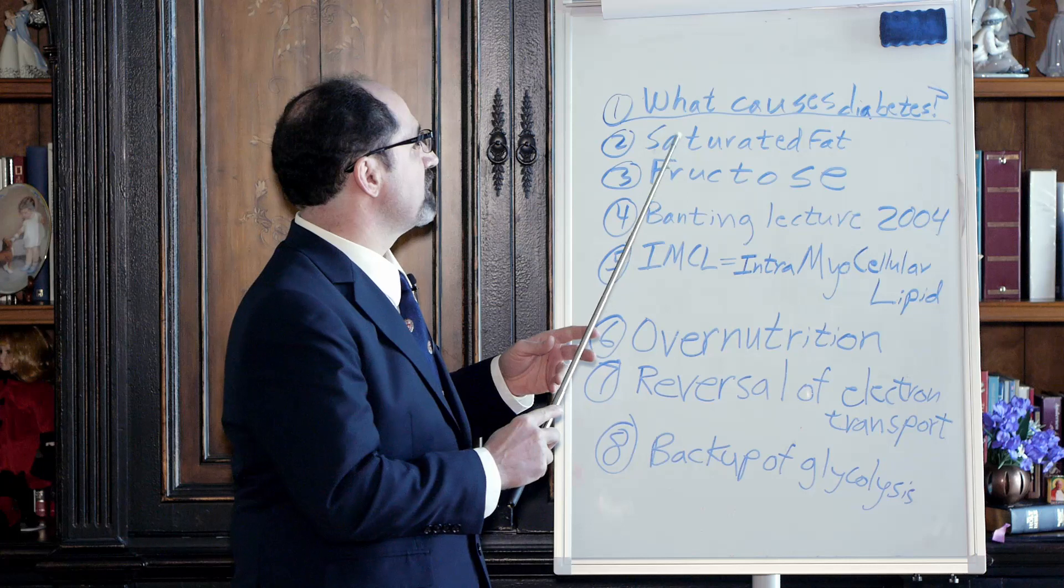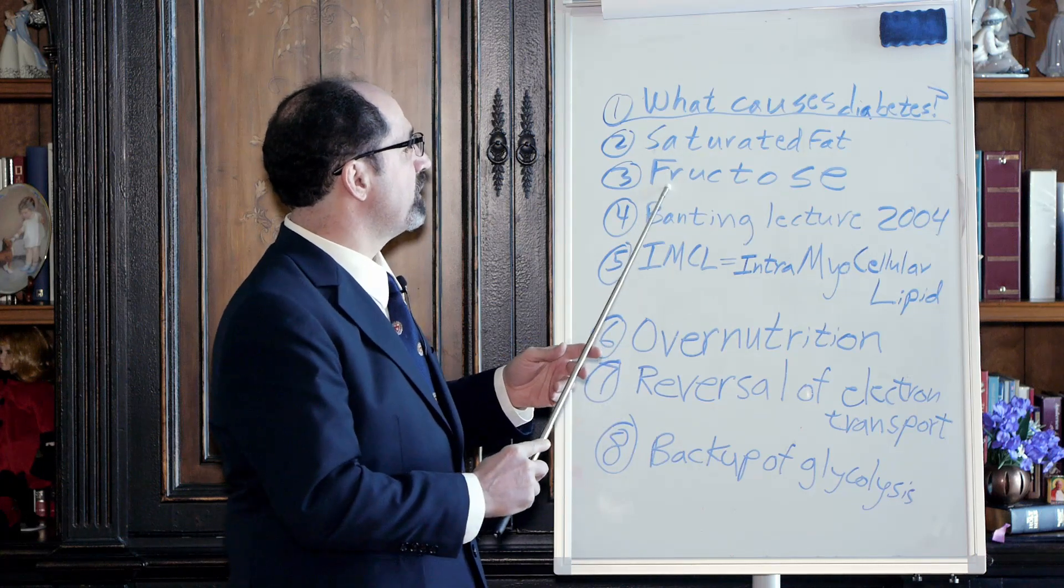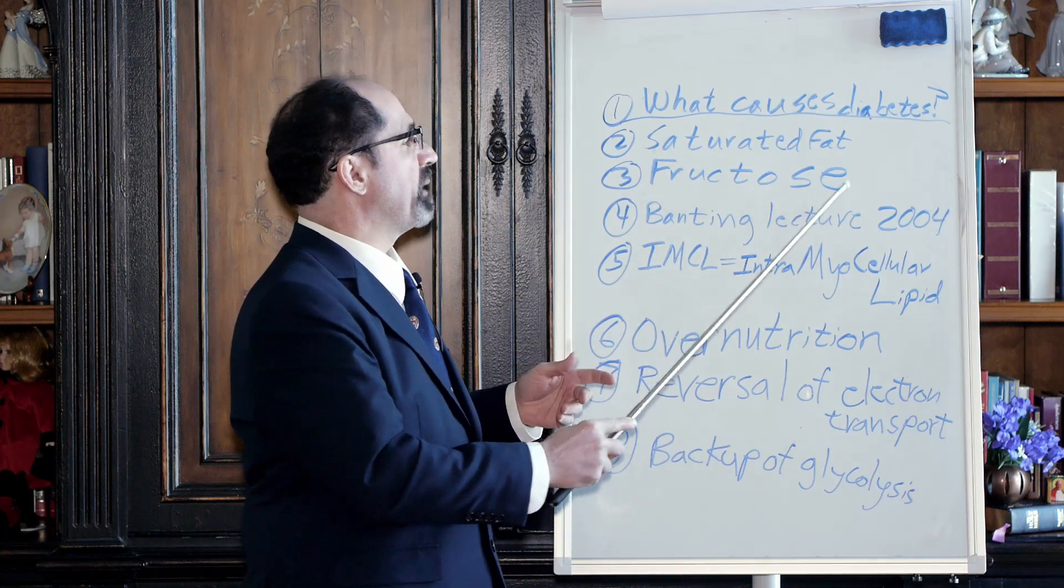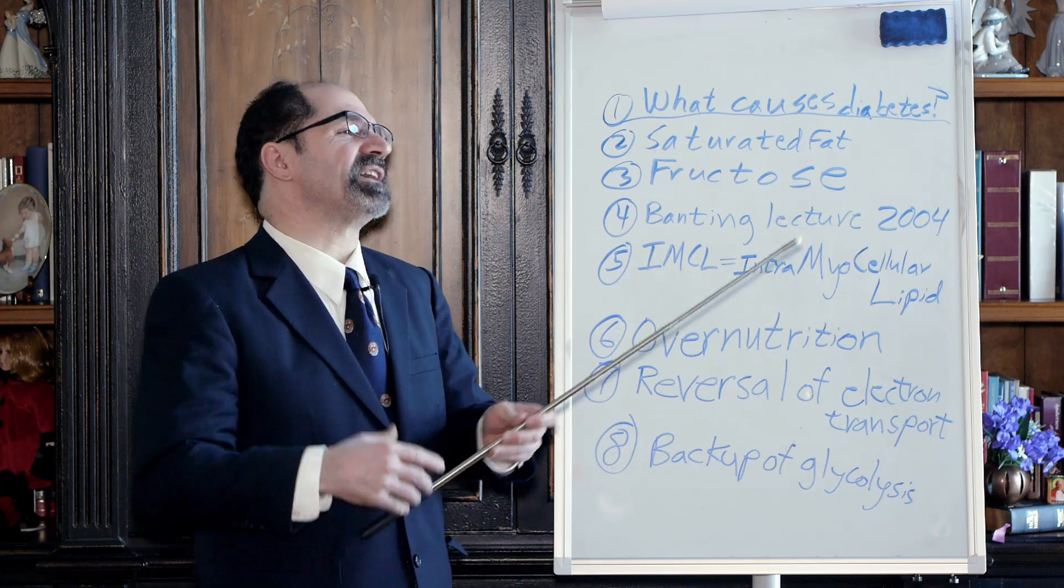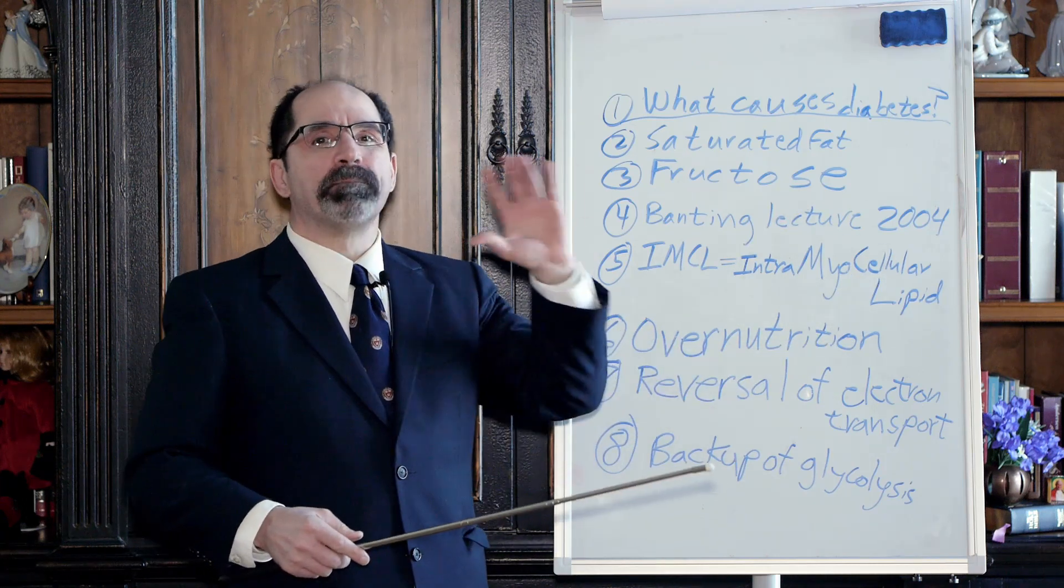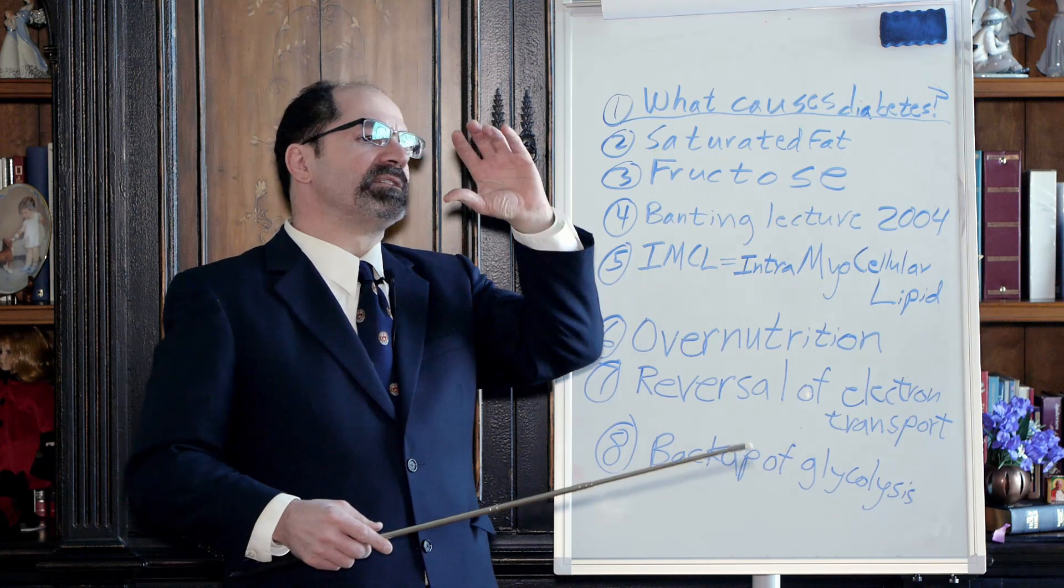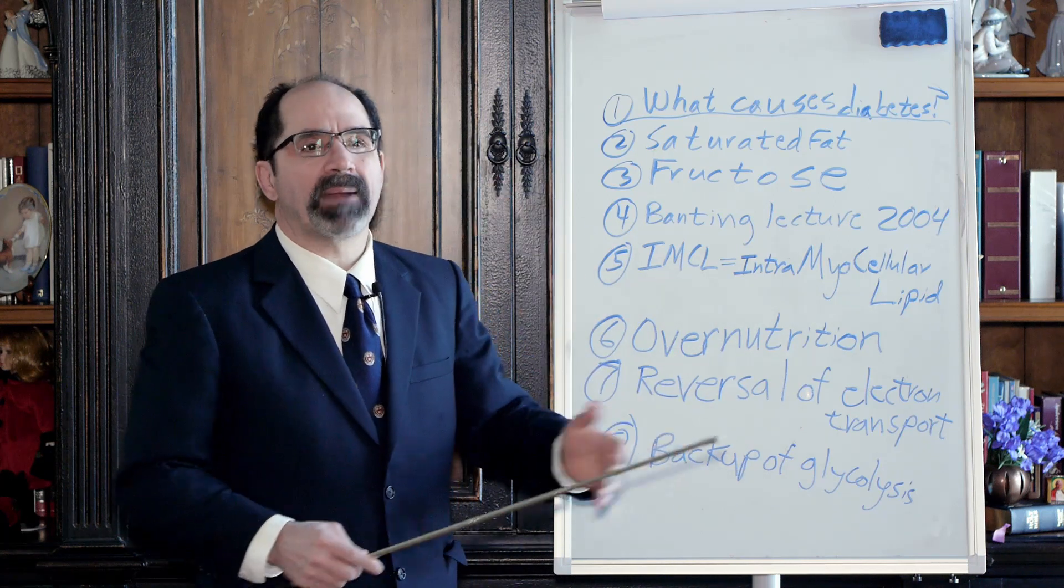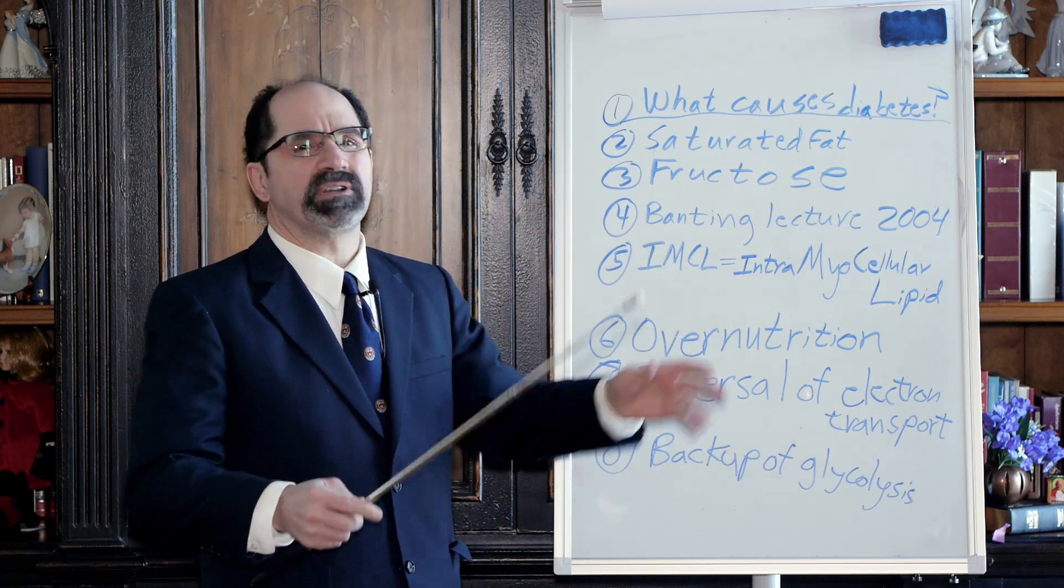So what causes diabetes? Eating excessive amounts of saturated fat or drinking excessive amounts of fructose. When I say drinking excessive amounts of fructose, I just mean that the fastest way to bolus yourself with fructose is drinking a whole bunch of soda pop or one of these other sweetened drinks, energy drinks, any one of those things.